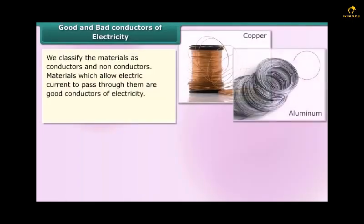We classify materials as conductors and non-conductors. Materials which allow electric current to pass through them are good conductors of electricity. Metals like copper and aluminum are a few examples.